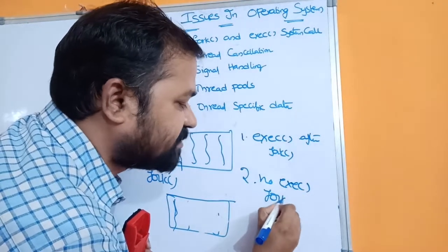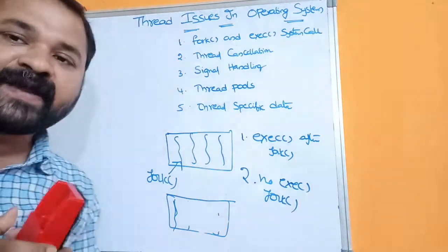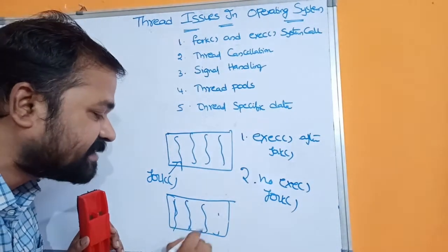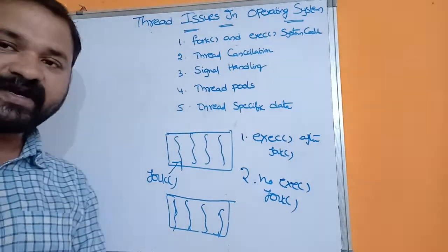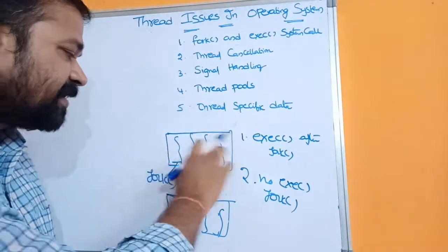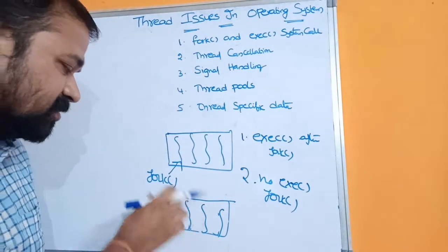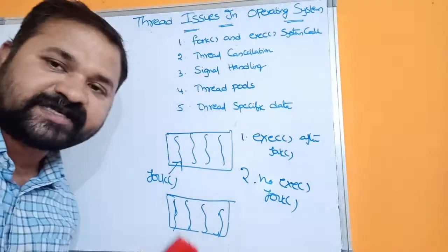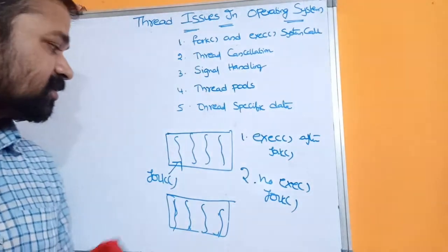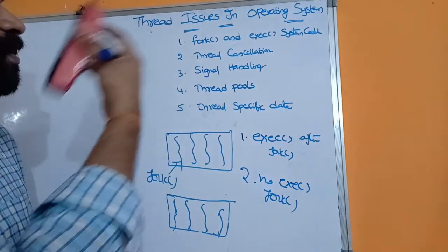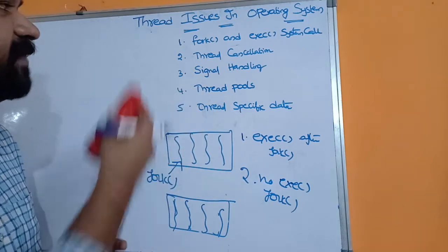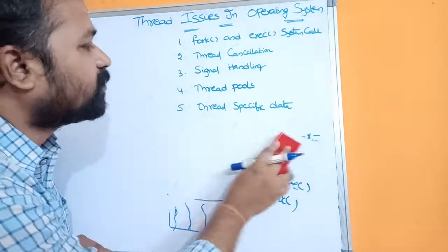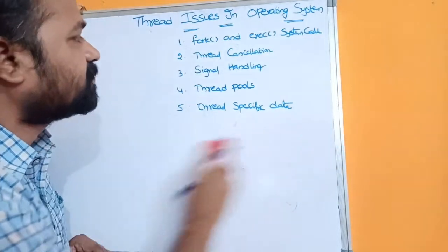The second option is if there is no exec system call — that means we only have fork. Then it is better to create the new process with as many threads as in the parent process. Since our parent process contains 4 threads, the fork system call should also create the new process with those 4 threads. That is what happens when a thread calls fork and exec system calls.